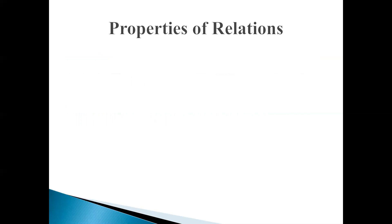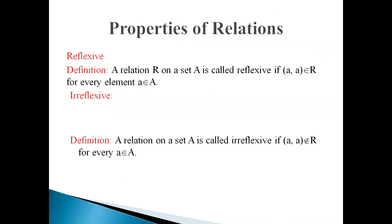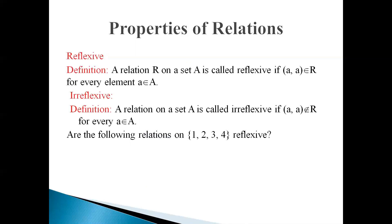Then, properties of relations. There are four basic properties of a relation. The first one is reflexive. The definition of a reflexive property is: a relation R on set A is called reflexive if (A, A) belongs to relation R — meaning the same element appears twice in one pair — and it is true for every element of A. Irreflexive is the opposite of reflexive: a relation on set A is called irreflexive if the pair (A, A) is not present in relation R for every element of set A.